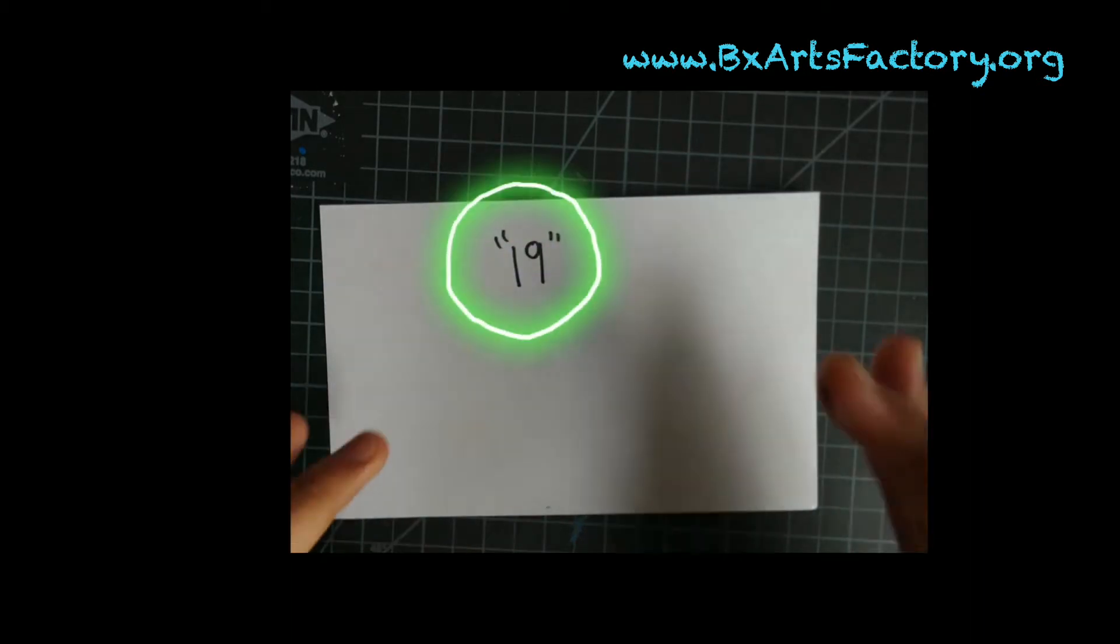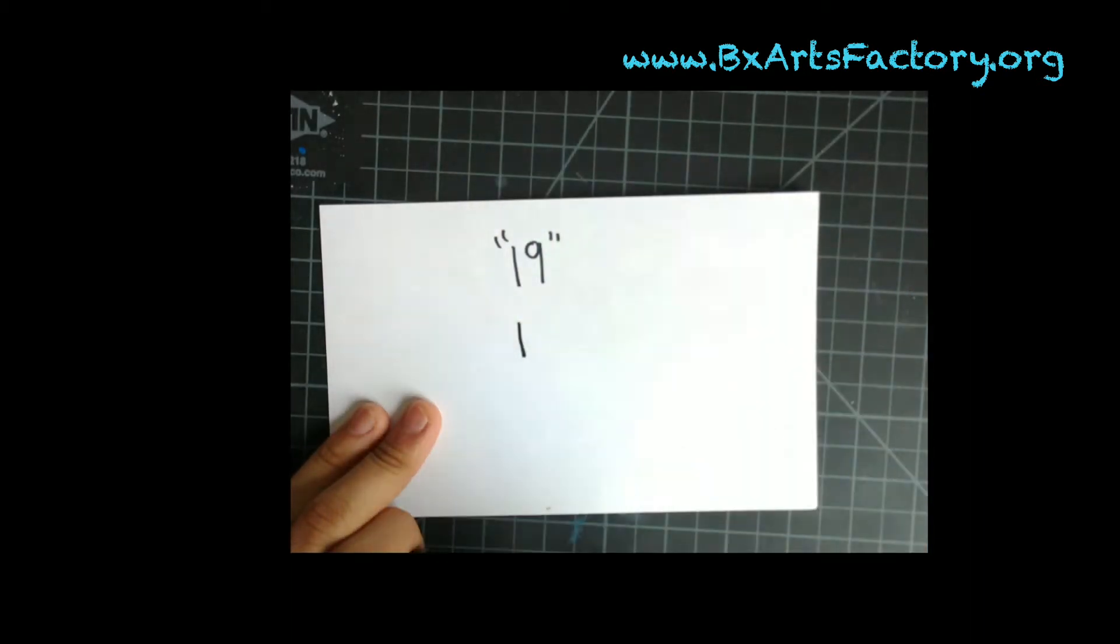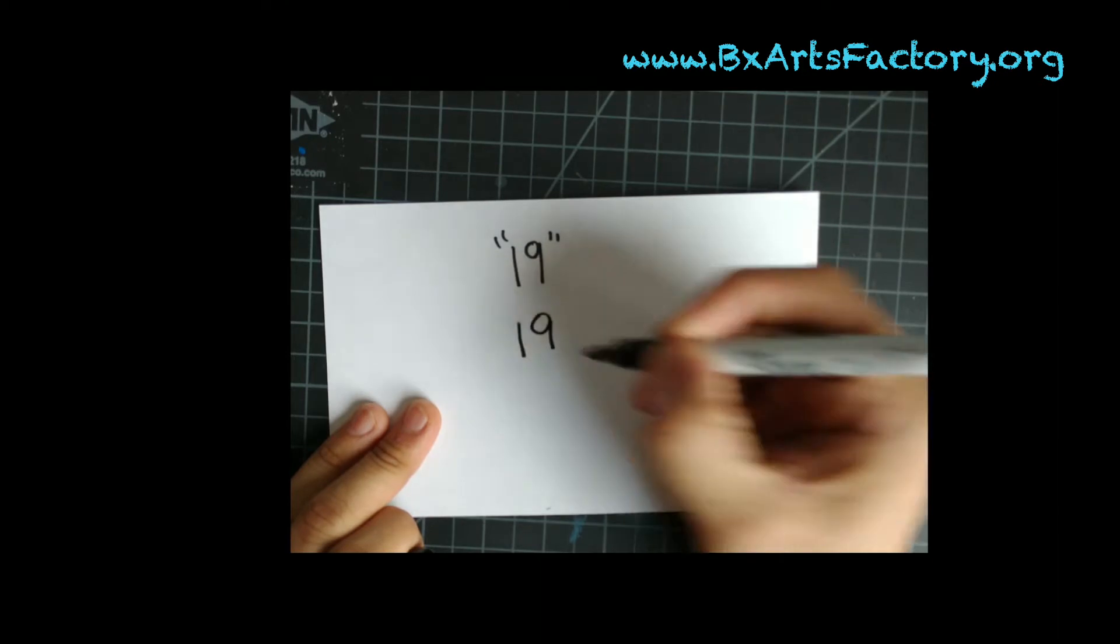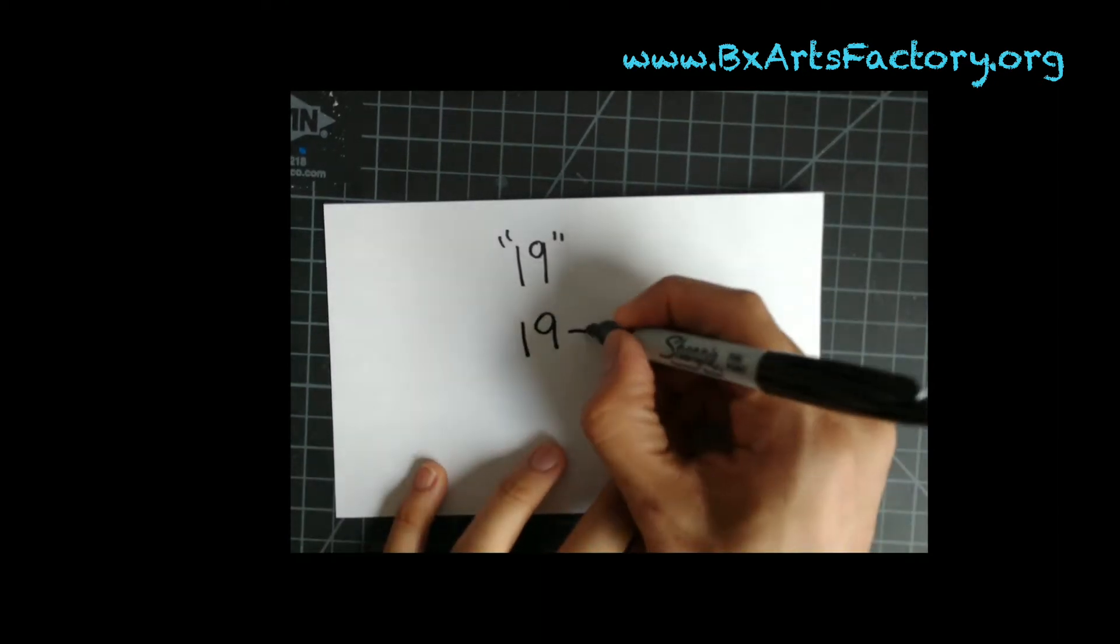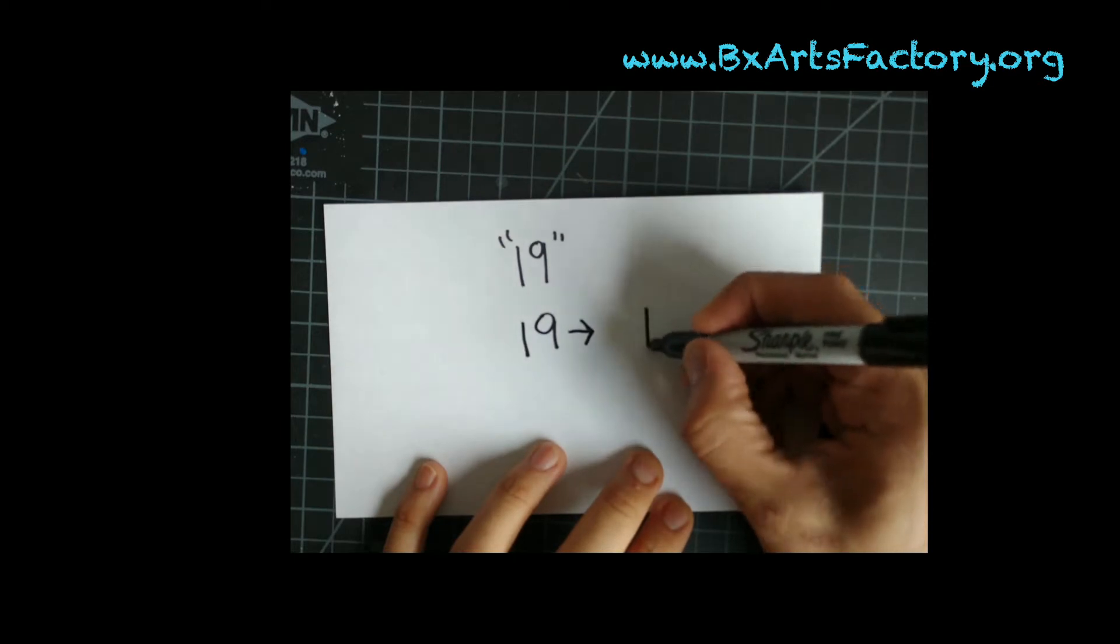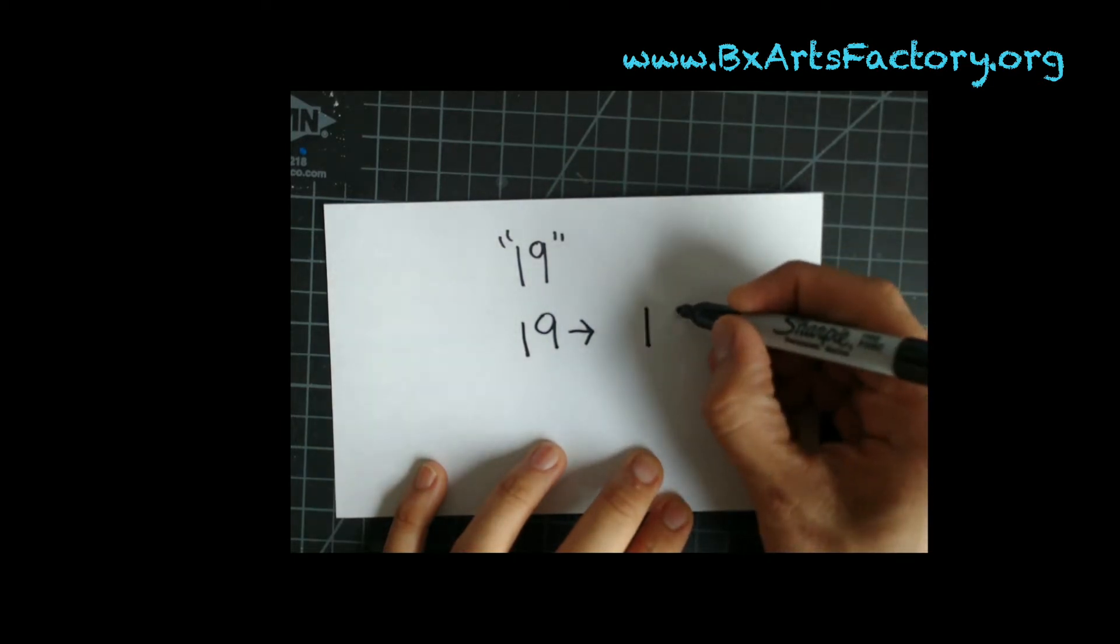Usually we draw the number 19 with a straight number 1 and a 9 with a straight stick down. But today we're gonna change it because you're gonna need to slightly curve the 9. So we're gonna draw the 1 normally, have a semi open 9 like this and we're gonna curve it down like that.